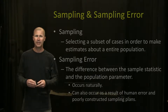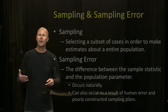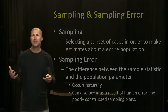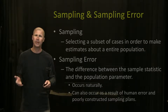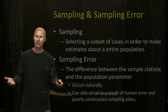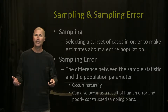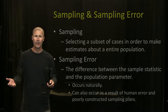Sampling error is the difference between the sample statistics and the population parameters. While we do our best to make the sample reflective of the population, it's always going to differ to some degree — and that is sampling error. It occurs naturally. However, sampling error can also be influenced by the researcher and some of the mistakes they may make in their sampling design, and we'll take a look at a few of those mistakes.